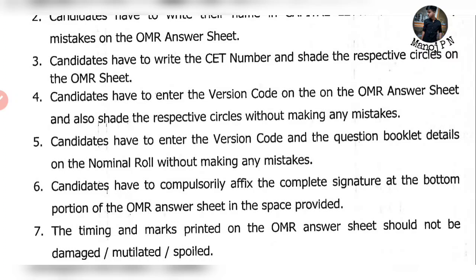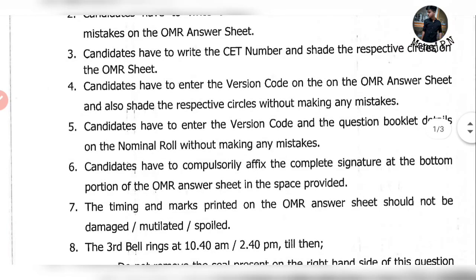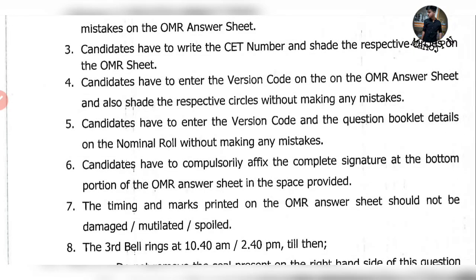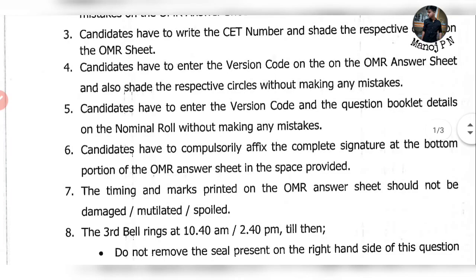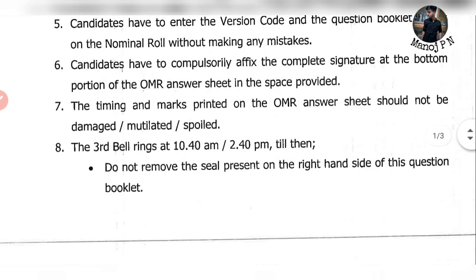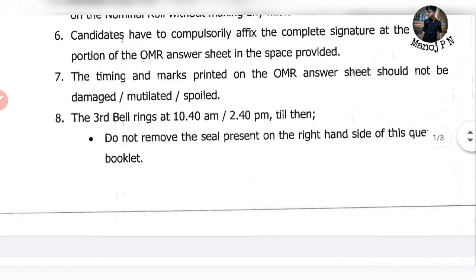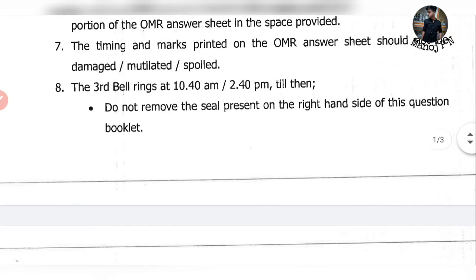I will help you in the demo. Candidates have to enter the version code on the OMR sheet and also shade the respective circles without making any mistakes. If you have a mistake, mark the version code. Candidates have to enter the version code on the question booklet without any mistakes. Candidates have to compulsorily affix their signature on the OMR sheet. The timing and marks printed on the OMR sheet should not be altered, damaged, or spoiled.